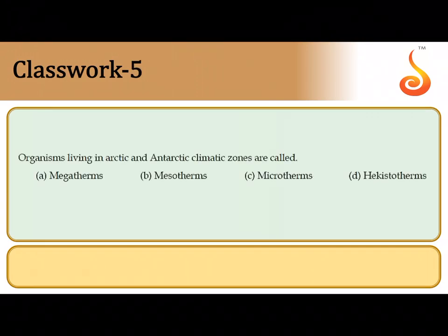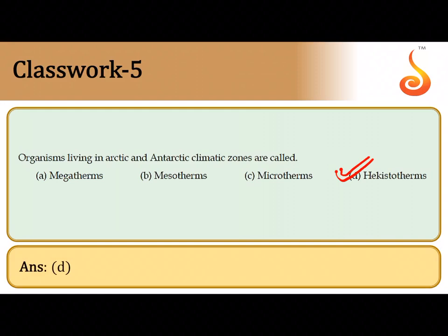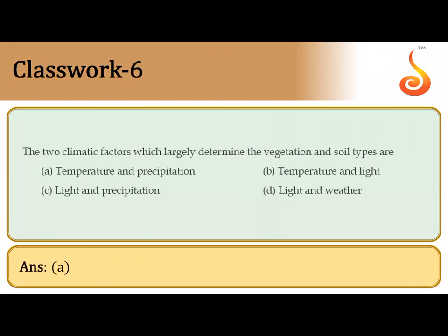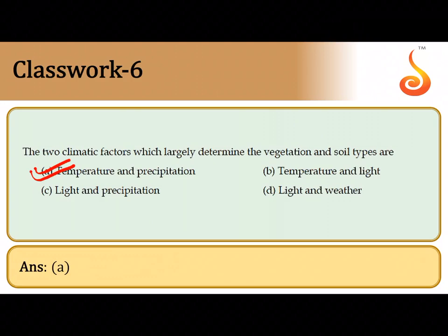The fifth question: organisms living in arctic and antarctic climate zones are called hekistotherms, in terms of their ability to tolerate extremes of cold temperature. The sixth question asks for the two climatic factors that largely determine vegetation and soil type. These are temperature and precipitation — they determine what kind of plants grow in a particular environment, the soil's water content, salinity, and pH.